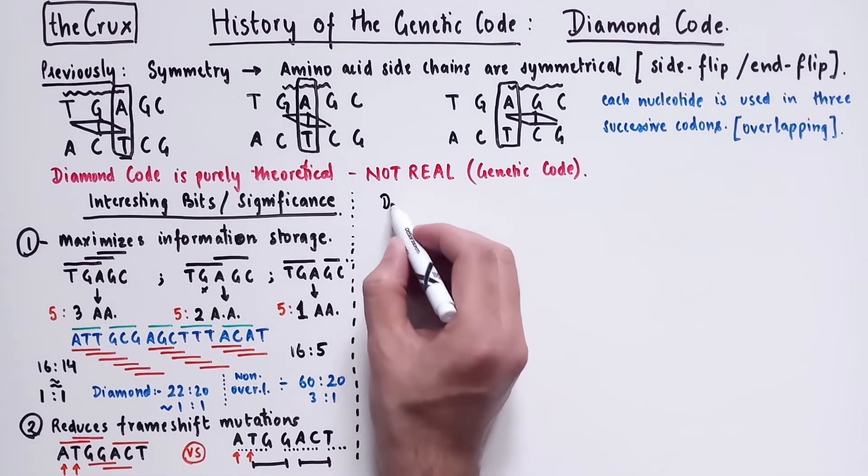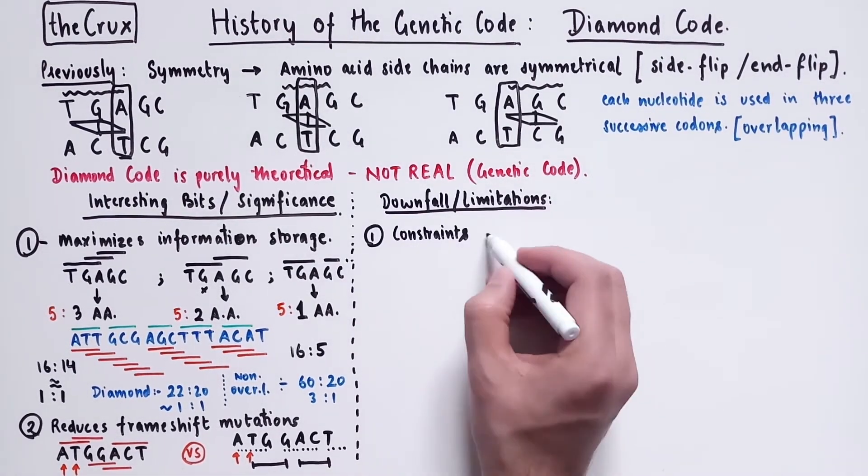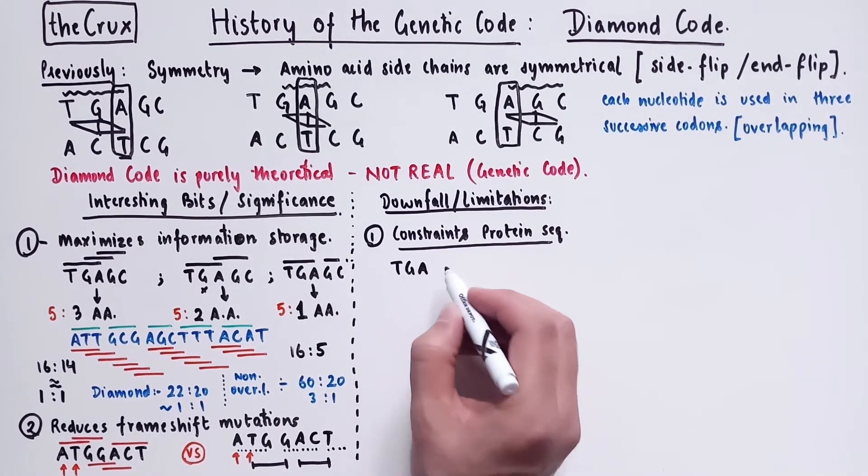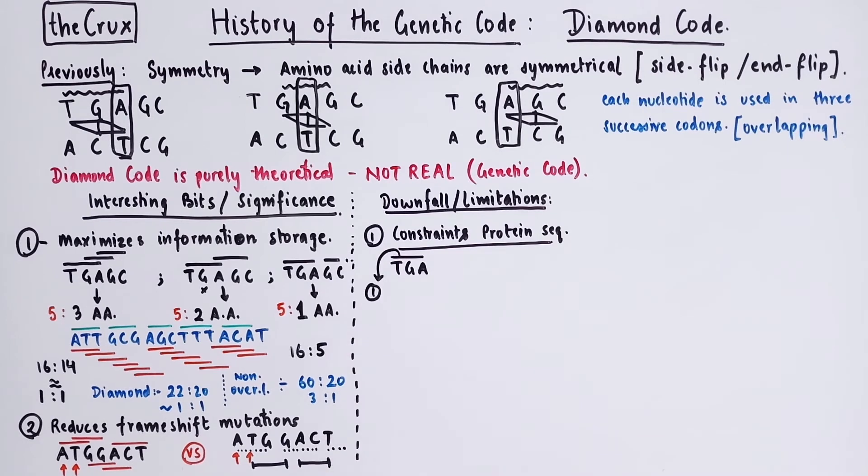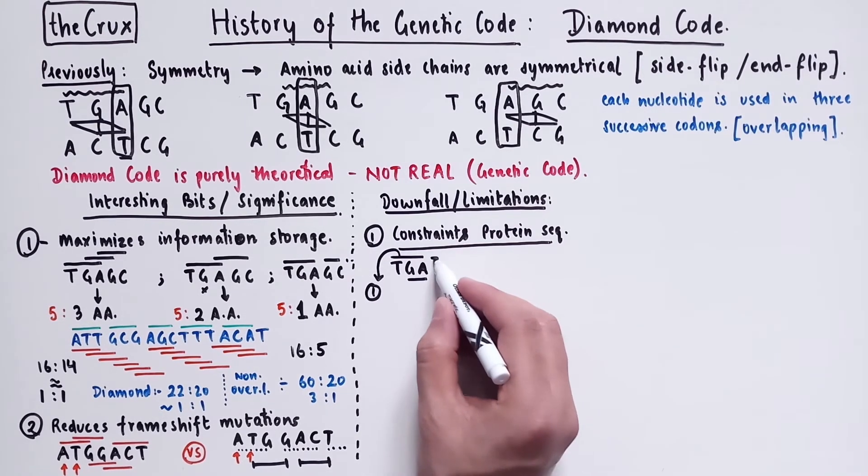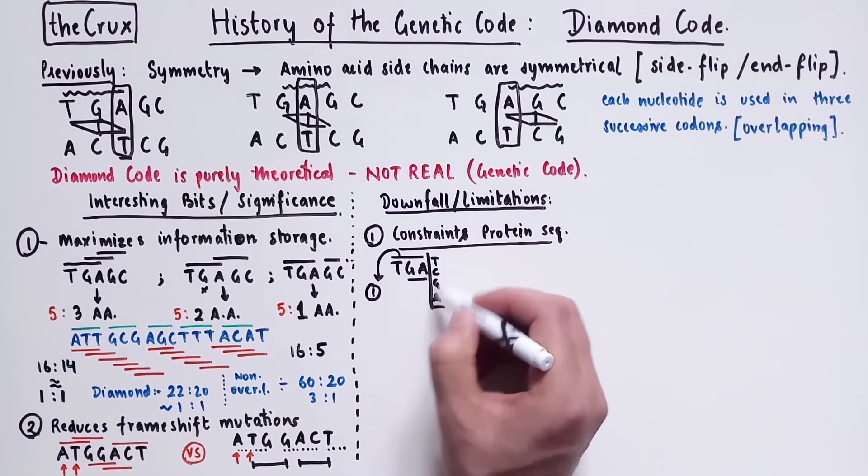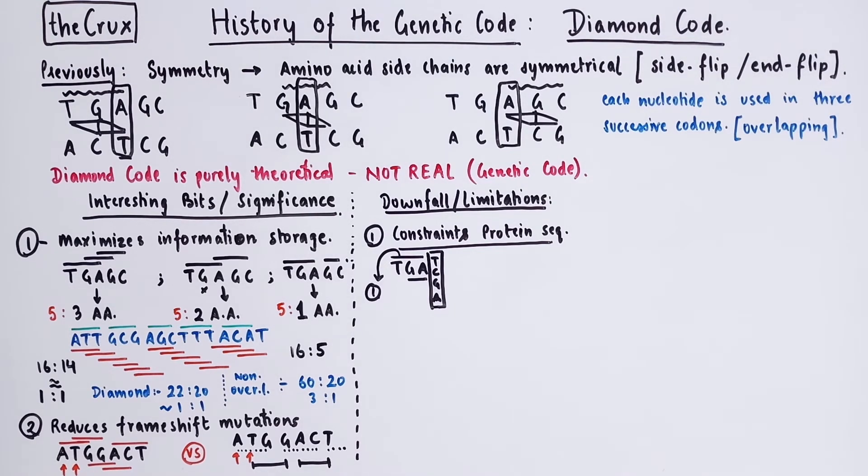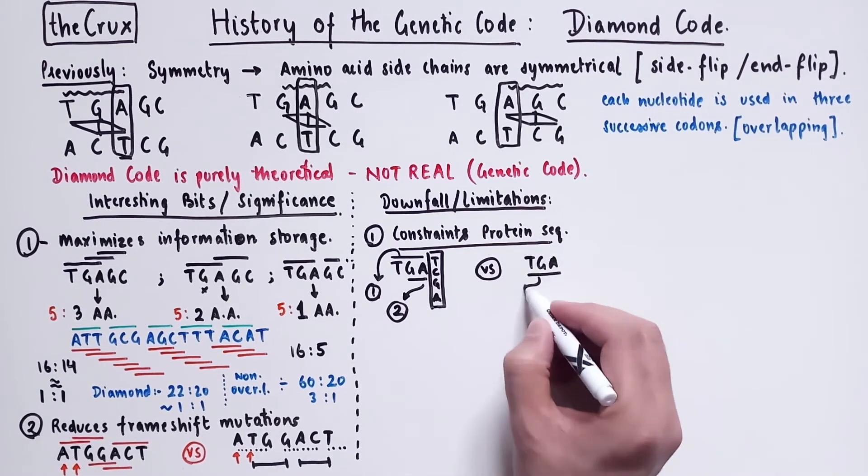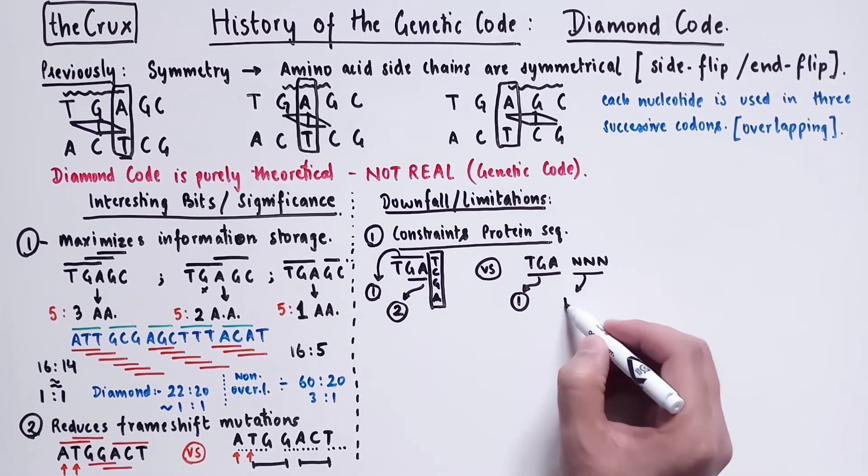Now we can take a look at its major downfall or limitations. The first is the overlapping property, which actually constrains the resulting protein sequence. If you have a codon TGA as the first codon, it will code for the first amino acid. Then the next amino acid to be coded, it must have a codon that starts with the GA. And thus, it can only be GAT, GAC, GAG, or GAA. And this second codon will code for the second amino acid. Now contrast this with the non-overlapping code. The TGA of course will result in the same amino acid, but the second codon is completely independent of the first one. So you have no constraints on the second amino acid.